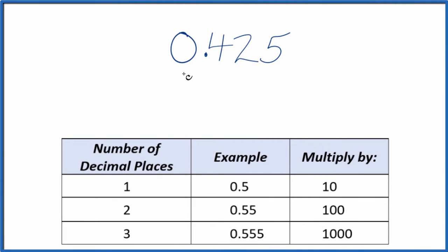All right, let's convert the decimal 0.425 to a fraction. So first off, I'm going to call it 0.425 over 1. We're not really changing the value, we're just dividing by 1. But now we have the start of a fraction.